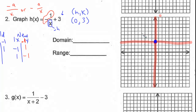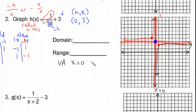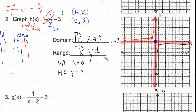Starting at the blue dot, we go to the left one unit and up one unit, and to the right one unit and down one unit. This is a reflection over the x-axis. What was on one side is now flipping to the other. The vertical asymptote is at x equals 0, and the horizontal asymptote is at y equals 3. The domain is all real numbers but x is not equal to 0, and the range is all real numbers but y is not equal to 3.